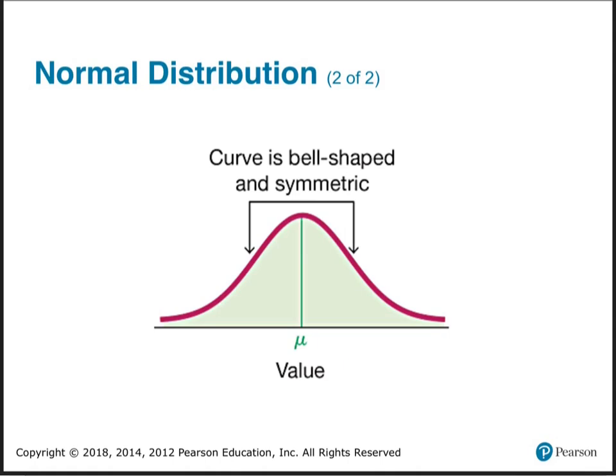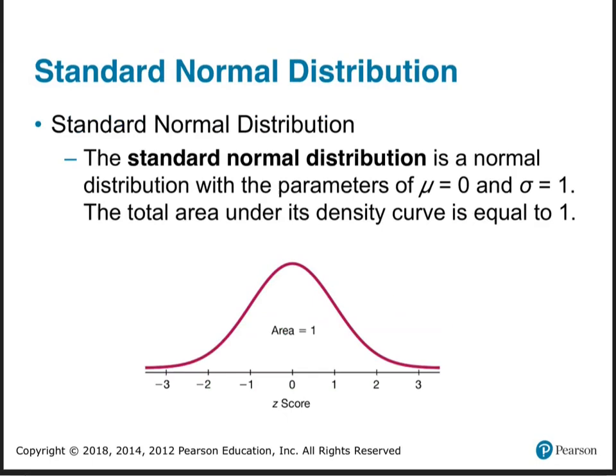Bell-shaped. Remember normal distributions, bell-shaped? Remember how pretty much everything that occurs naturally is bell-shaped distribution? If I grabbed a bunch of leaves off a tree and weighed them all, there'd be some average, and there'd be some bigger, heavier leaves, lighter leaves, and they'd be bell-shaped in their distribution. Anything occurring naturally — men's shoe size, right.